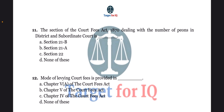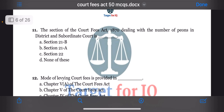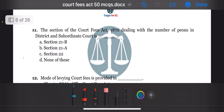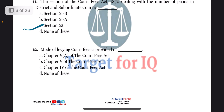Next question: the section of the Court Fees Act 1870 dealing with the number of peons in district and subordinate courts is dash. The options are A. Section 21B, B. Section 21A, C. Section 22, or D. None of these. The correct answer is option C. Section 22.